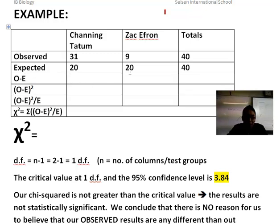31 minus 20, 9 minus 20. Square those values. Divide those values by the expected. And add these together.